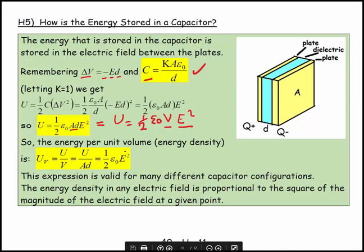And so this is U over Ad, which equals one half epsilon naught times E squared. This expression is valid for many different capacitive configurations. The energy density in any electric field is proportional to the square of the magnitude of the electric field at a given point.